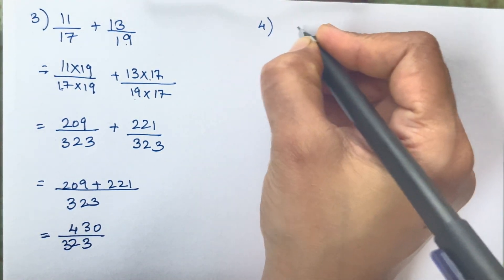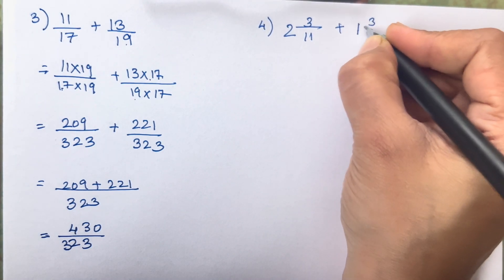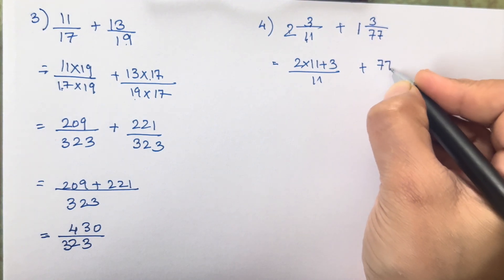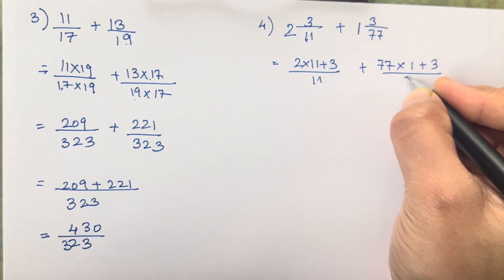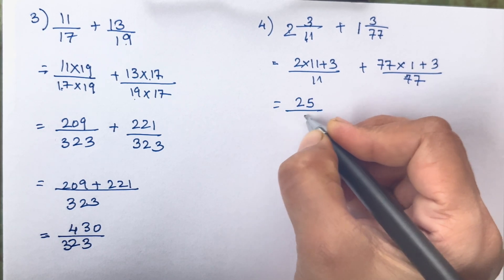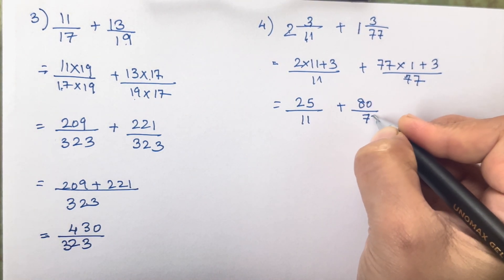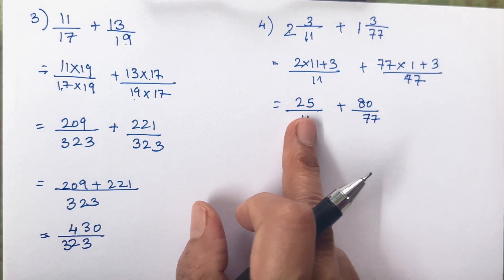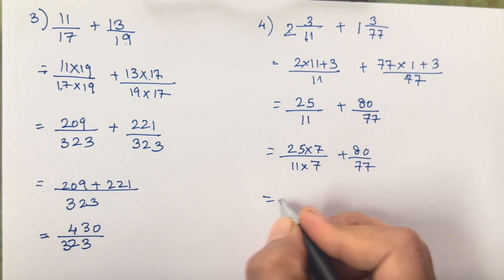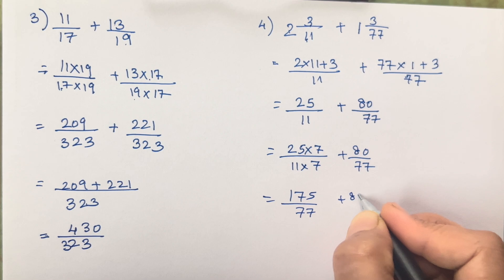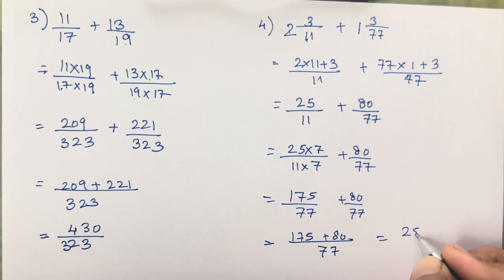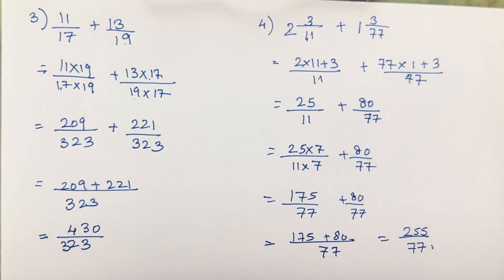Now let's move on to the fourth question, which is a mixed fraction again. We multiply and add: 2 × 11 + 3 upon 11 gives 25 upon 11, and 1 × 77 + 3 upon 77 gives 80 upon 77. We keep 77 as it is and multiply only the first fraction: 25 × 7 over 11 × 7 = 175 upon 77. Adding 175/77 + 80/77 gives 255 upon 77.